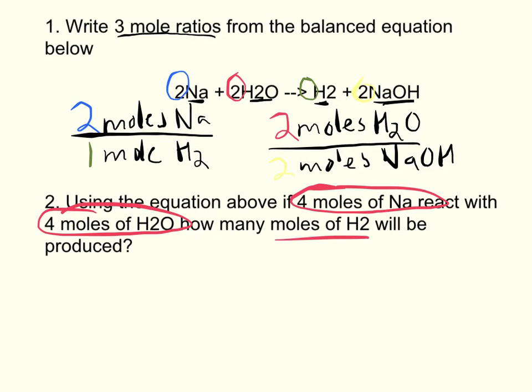It doesn't matter, since both of them are going to tell you the same final answer. You could set this up like a conversion factor. We could say four moles of Na, once again doesn't matter what you start with, times a mole ratio where we convert from moles of Na to moles of our unknown, which is H2.